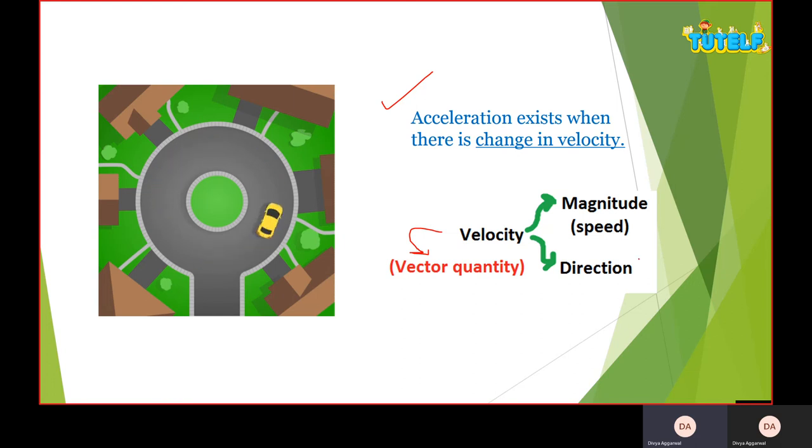So if I change one or two things, then my velocity changes. And if I change my velocity, then my acceleration is changing. Now here I see that my direction is changing, so my velocity is changing, so my acceleration is changing. If my speed is changing, then my velocity is changing.